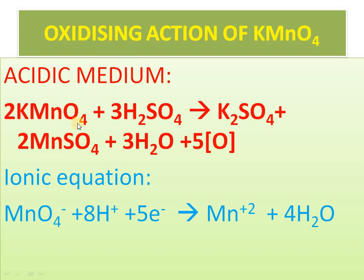The second way to explain is to calculate the oxidation number of manganese. Oxygen has an oxidation number of minus 2, and 4 × (−2) = −8. If we calculate x: −8 + x + 1 = 0, so x − 7 = 0, therefore x = 7. The oxidation number of manganese in KMnO4 is +7.